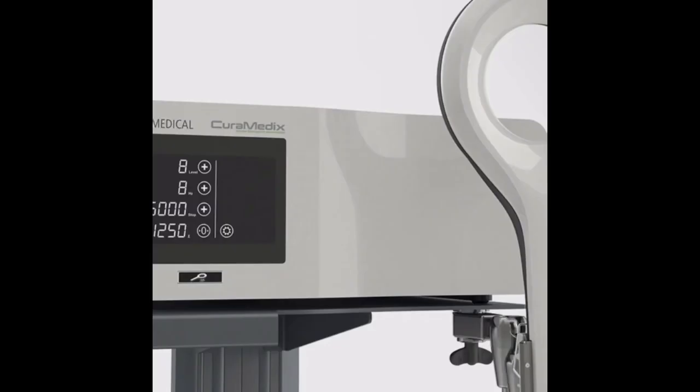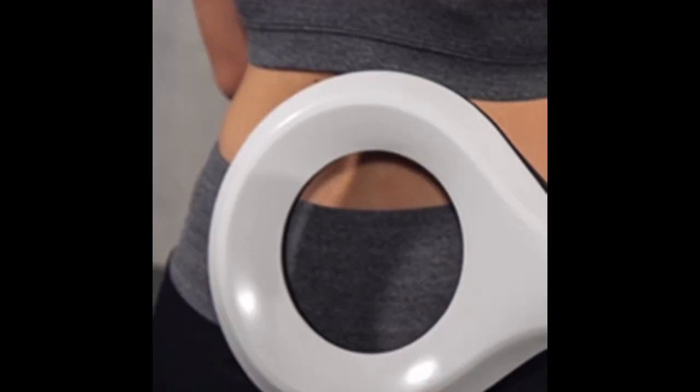The second non-surgical, non-invasive therapy that is being used is extracorporeal magnetotransduction therapy. A typical device is pictured here. With this device, the therapy loop is positioned over the area to be treated, and the patient can be fully clothed.